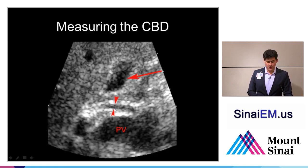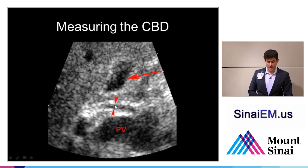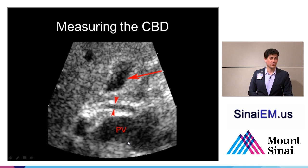We measure the common bile duct differently than the aorta. For the aorta, we measure outer wall to outer wall. For the common bile duct, we measure the inner wall — the inner diameter. Here we see it between the gallbladder at the top of the screen and the portal vein, which is the large anechoic structure behind, with the common bile duct between the two arrowheads.